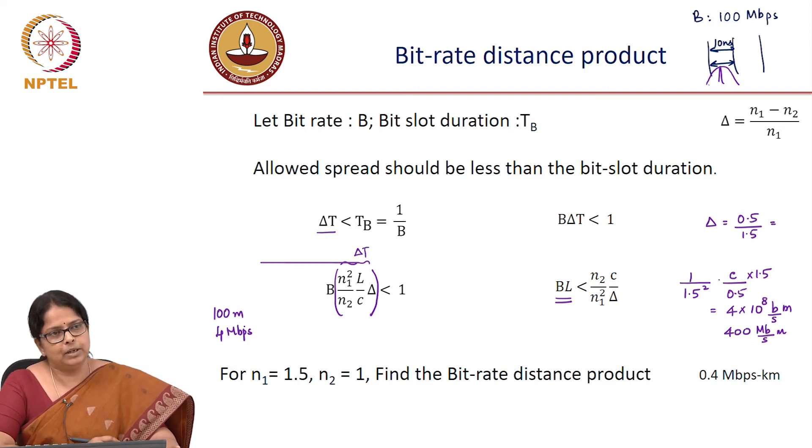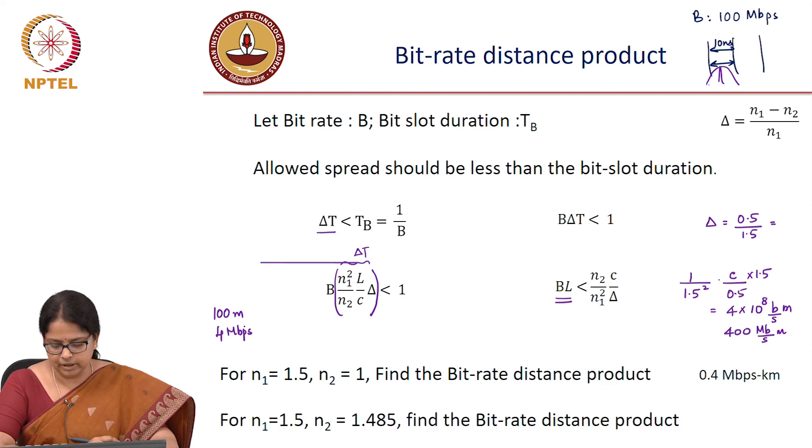And that is intuitive to understand because it depends only on the angle of launch. Angle of launch or numerical aperture never dependent on the diameter of the fiber. How do you, what is your first strategy to improve this information carrying capacity of this fiber? Increase N2. What happens when you increase N2?